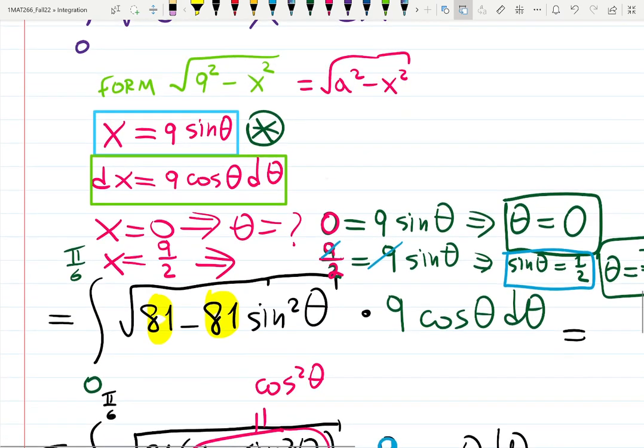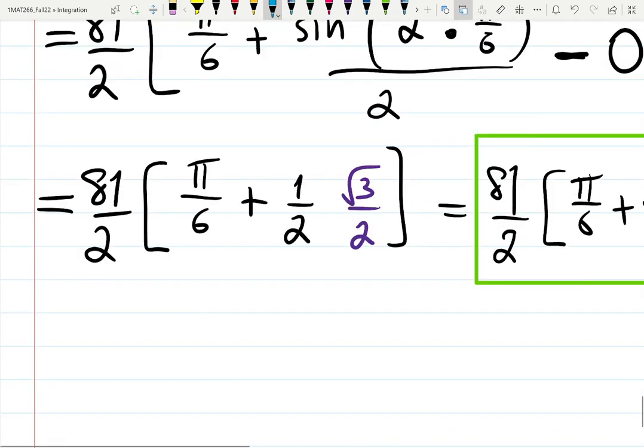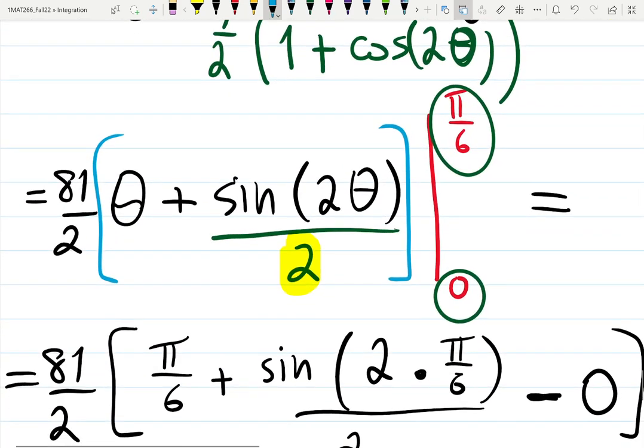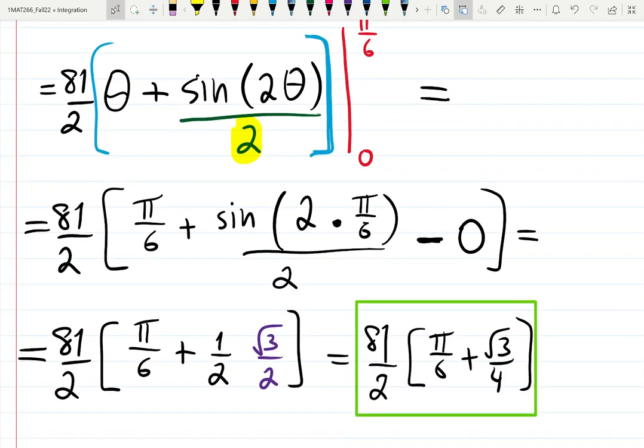That might answer the question some of you wanted to ask - why not to keep the previous limits of integration? This looks like a hassle to perform this change. If you keep 0 and 9/2, then you will have to go back to the original variable, and that will require right triangle. This is a good example when changing actually is easier.